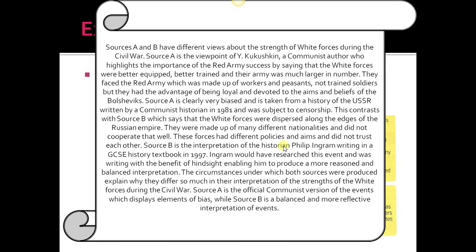The candidate writes: Sources A and B have different views about the strength of White forces during the Civil War. Source A is the viewpoint of Kukushkin, a Communist author who highlights the Red Army's success by saying the White forces were better equipped, better trained, and larger in number. The Red Army was made up of workers and peasants, not trained soldiers, but they had the advantage of being loyal and devoted to Bolshevik aims. Source A is clearly very biased, taken from a history of the USSR written by a Communist historian in 1981 and subject to censorship.